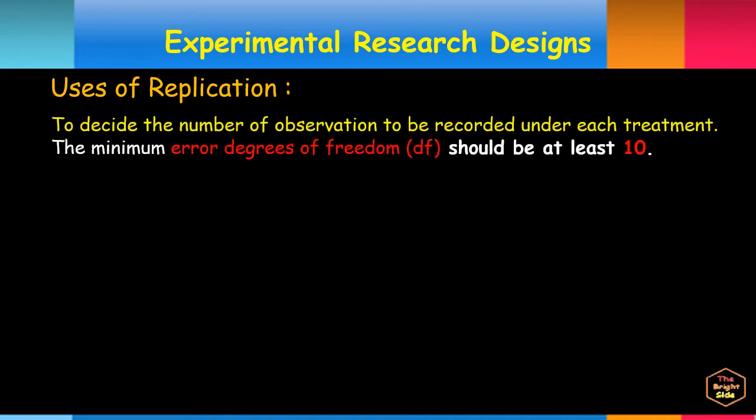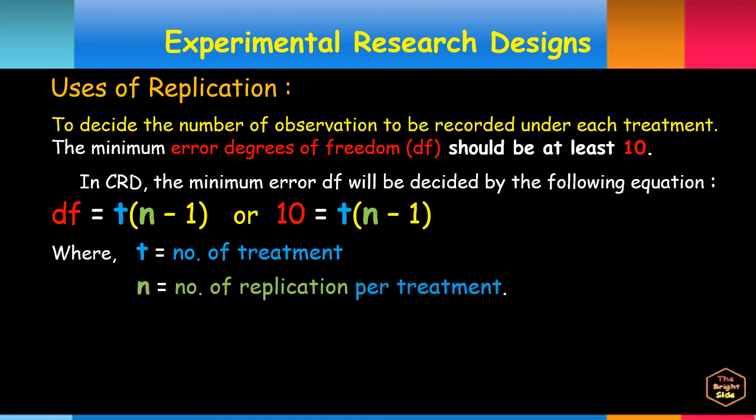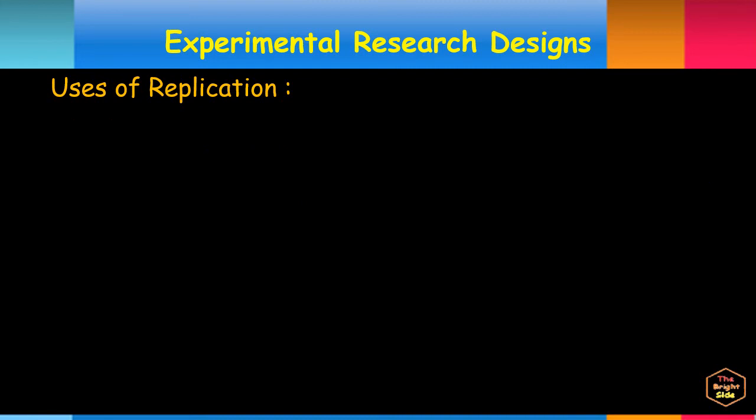To determine the required number of observations to be recorded under each treatment, we can use the formula for minimum error degrees of freedom. df is equal to t times N-1.